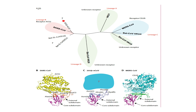The virus belongs to lineage B while MERS-CoV belongs to lineage C. We know that SARS-CoV enters via the ACE2 receptor and MERS-CoV enters via the CD26 receptor. At the time, we were not sure what the receptor for the novel coronavirus was.